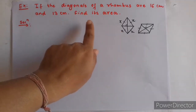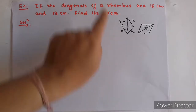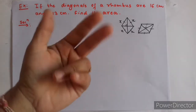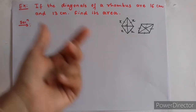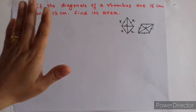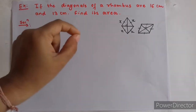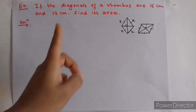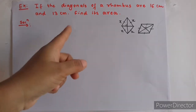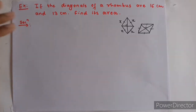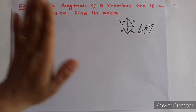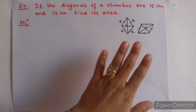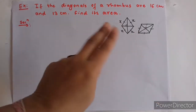The area of a rhombus equals base into altitude. The other formula is: area of rhombus equals half into the product of diagonals, that is D1 into D2.